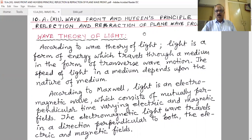We have also learnt about electromagnetic waves. We now know one nature of light is electromagnetic waves. In ray optics we were not considering the actual nature of light, but in this chapter we deal with the wave nature of light. In future we will also learn about the particle nature of light.